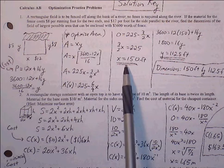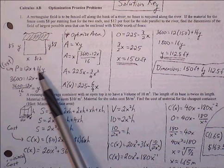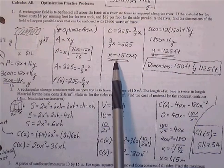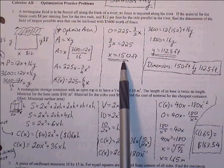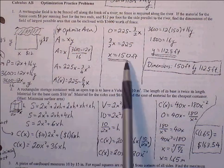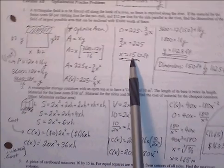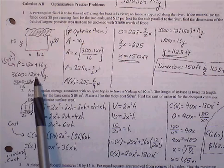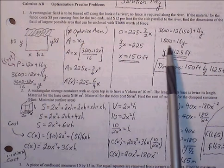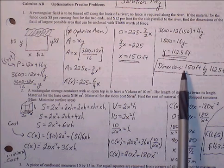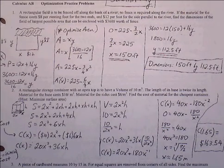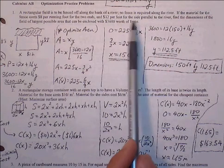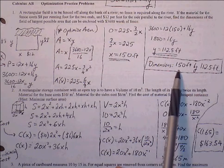The optimal x value, given the cost restrictions, is 150 feet. Using the cost equation with x equal to 150, we solve for y: 1,800 equals 16y, so y equals 112.5 feet. Therefore, the optimal dimensions to create the largest possible area, given these restrictions, are 150 feet by 112.5 feet.